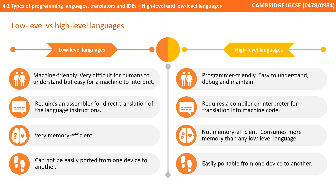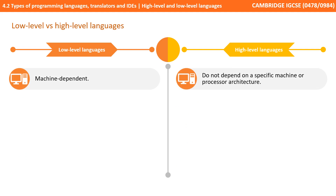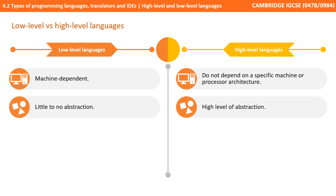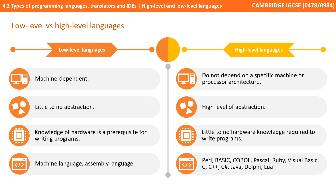Low-level languages cannot be easily ported from one device to another, whereas high-level languages can. Low-level languages are machine-dependent, whereas high-level languages do not depend on a specific machine or given processor architecture. There is very little abstraction when writing in low-level languages, whereas there is high-level abstraction when writing in high-level languages.